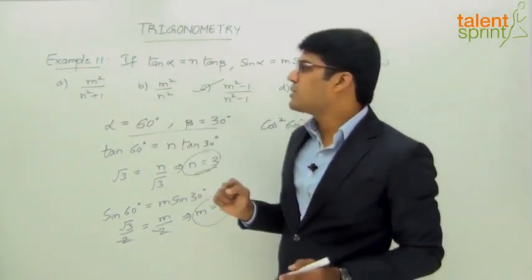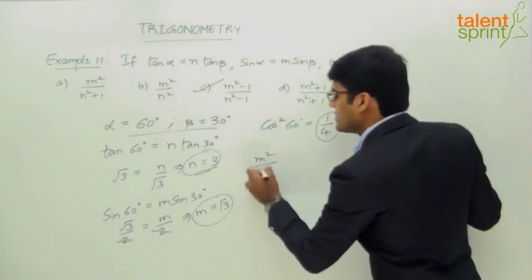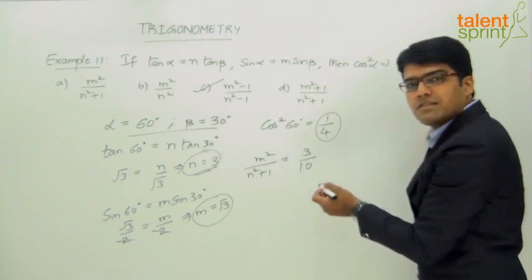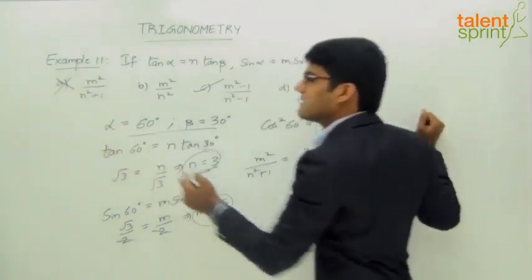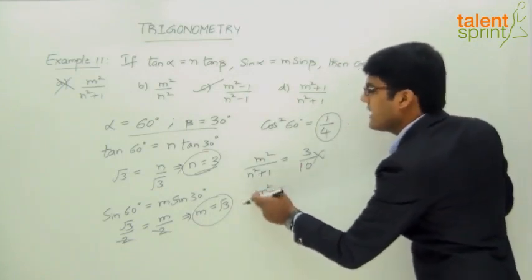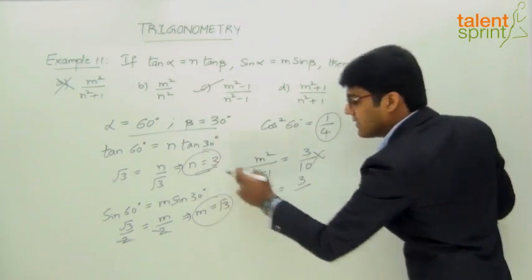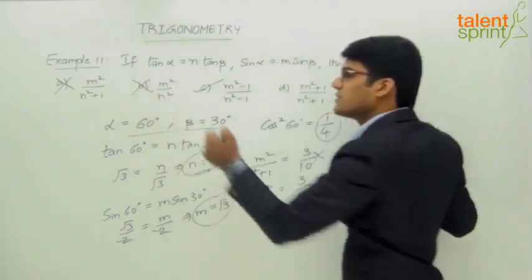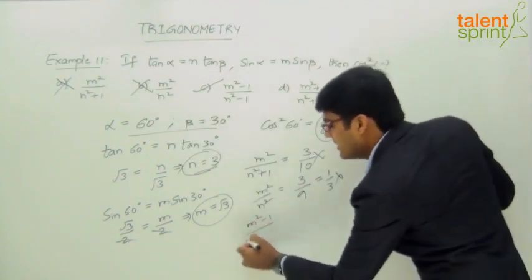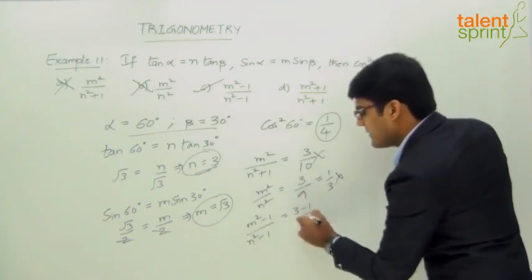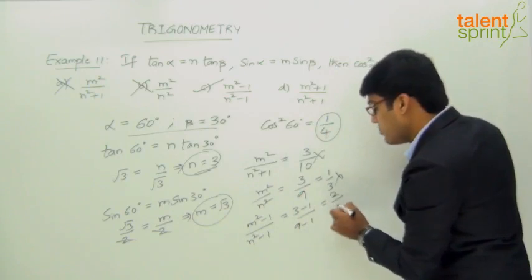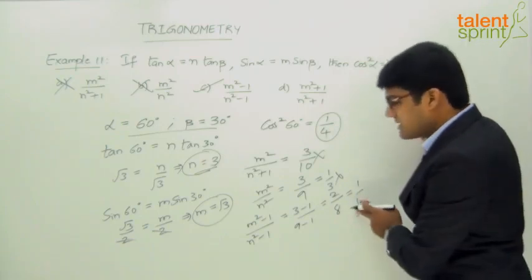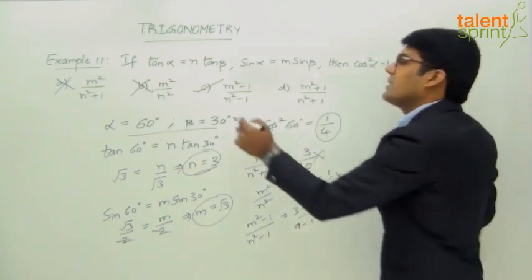Option 1: m²/(n²+1) = 3/(9+1) = 3/10. Not 1/4, so option A is wrong. Option 2: m²/n² = 3/9 = 1/3. Not 1/4, so option B is also ruled out. Option C: (m²-1)/(n²-1) = (3-1)/(9-1) = 2/8 = 1/4. That matches! Option D: (m²+1)/(n²+1) = 4/10 = 2/5. Not 1/4. Therefore, option C — m²-1 by n²-1 — is the correct answer.